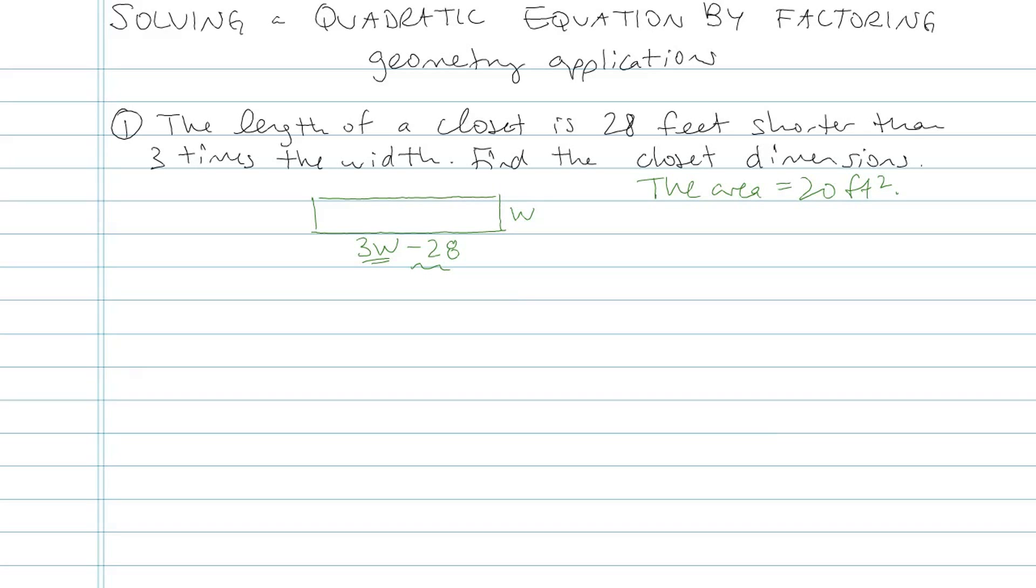We know the area of a rectangle is length times width. So length is three w minus twenty-eight, multiplied by the width, and the result should give us the answer twenty. Let's go ahead and distribute on the left-hand side and then set it equal to zero by subtracting twenty.